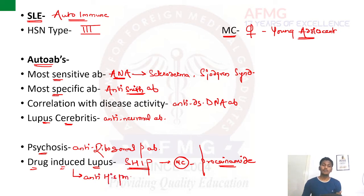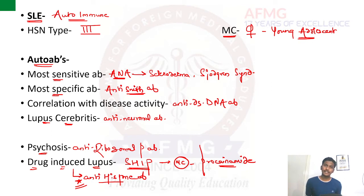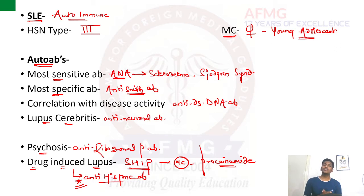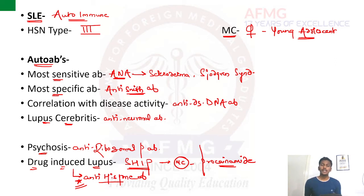Anti-histone antibody is positive in cases of drug-induced SLE. Importantly, this anti-histone antibody does not attack the CNS or the renal system. Therefore, in patients of drug-induced lupus, there are no chances of lupus cerebritis or lupus nephritis, and the patient would have a very good prognosis compared to other cases of SLE.